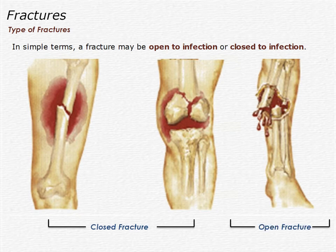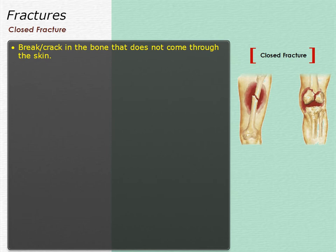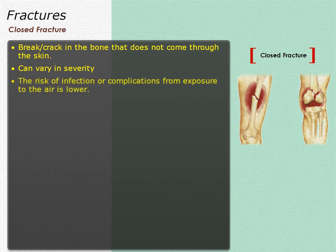Open fractures may require surgery, whereas closed fractures do not have a break in the skin and are identified by swelling and bruises. A closed fracture is a break or crack in the bone that does not come through the skin, but sometimes causes injury to tissues in the area. Because the skin is not opened in a closed fracture, the risk of infection or complications from exposure to the air is low.